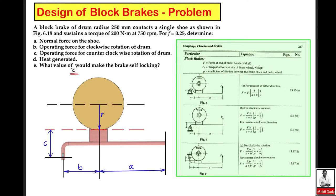Hello everyone. In this video we will be solving a simple problem from the design of block brakes. Here you can see a block brake with drum radius 250 mm that contacts with a single shoe. It sustains a brake torque of 200 newton-meter at the rated RPM of 750, and the coefficient of friction mu is equal to 0.25. We have to determine the normal force on the shoe.